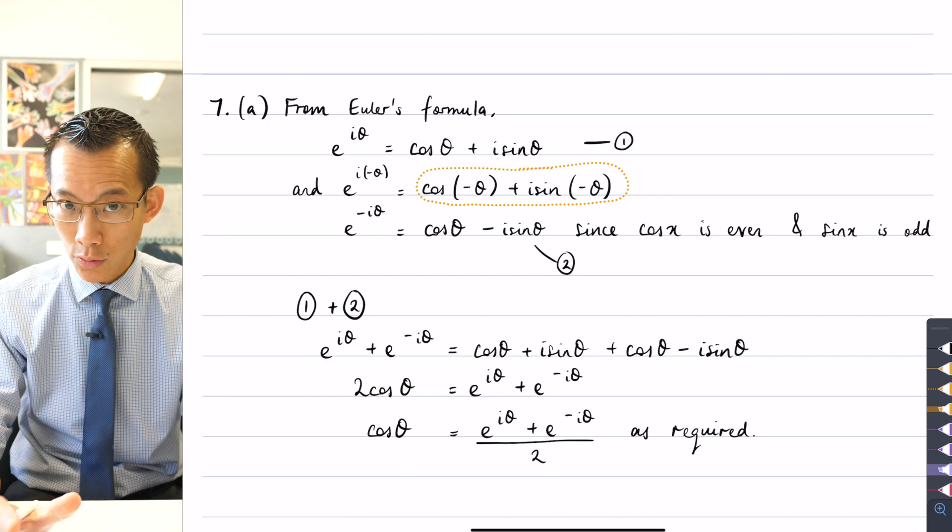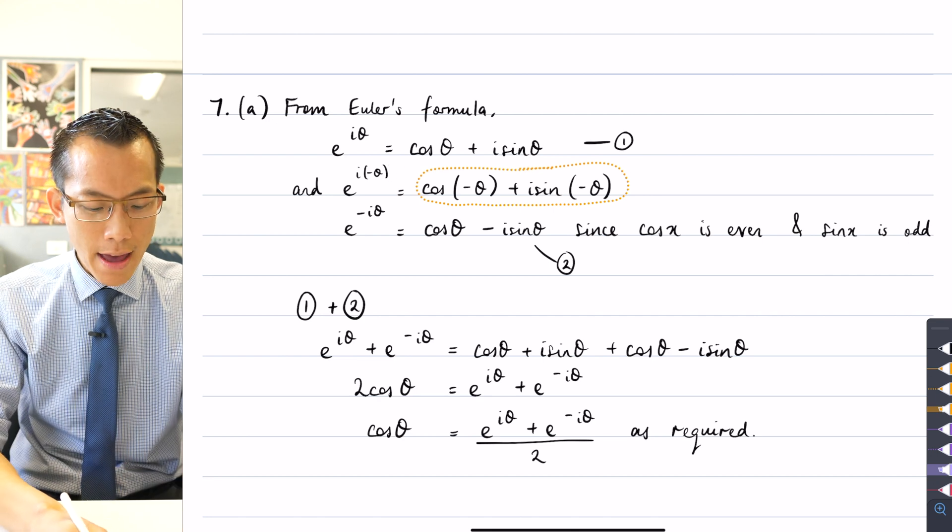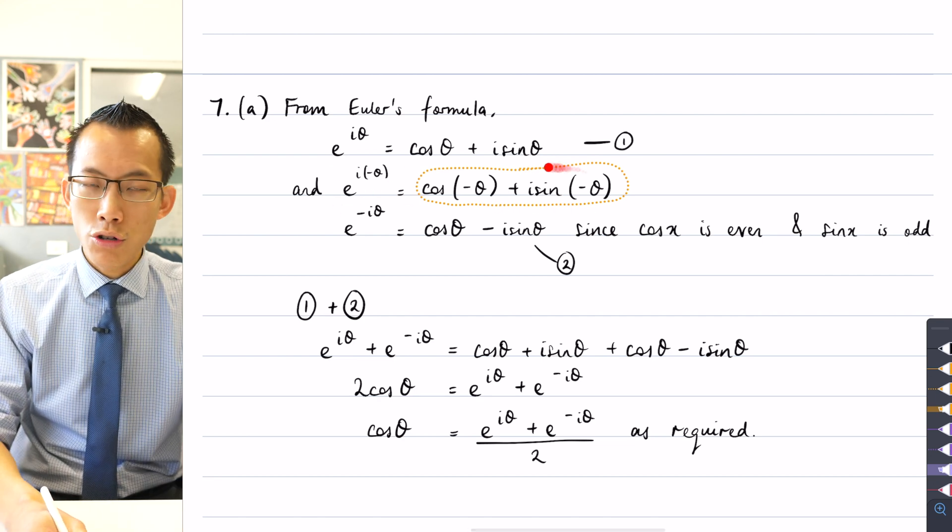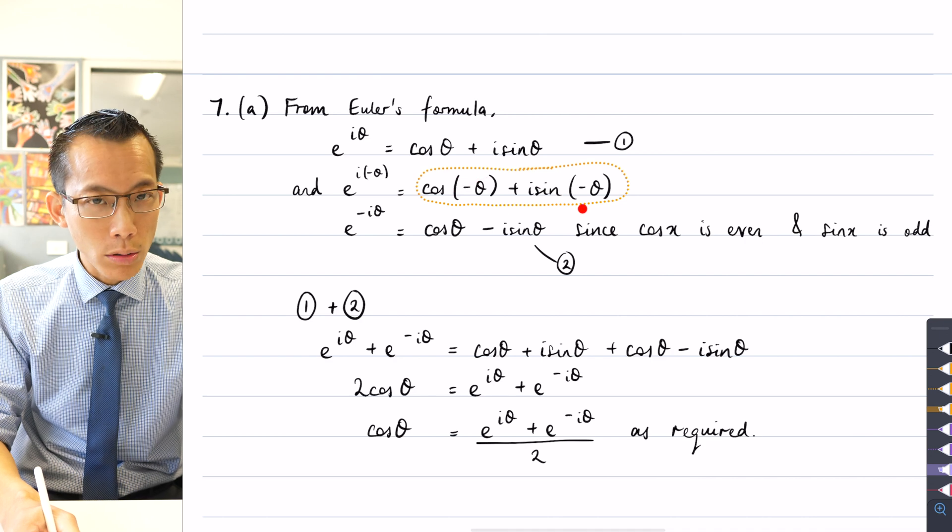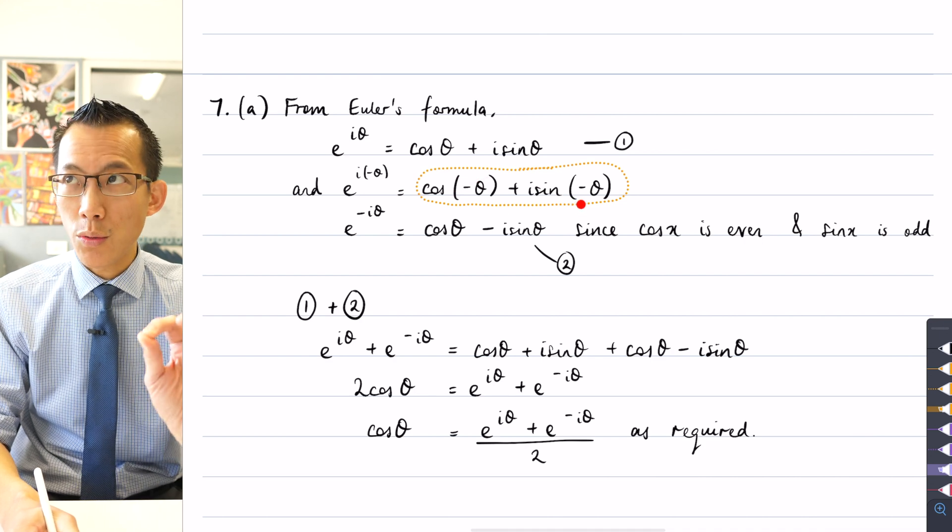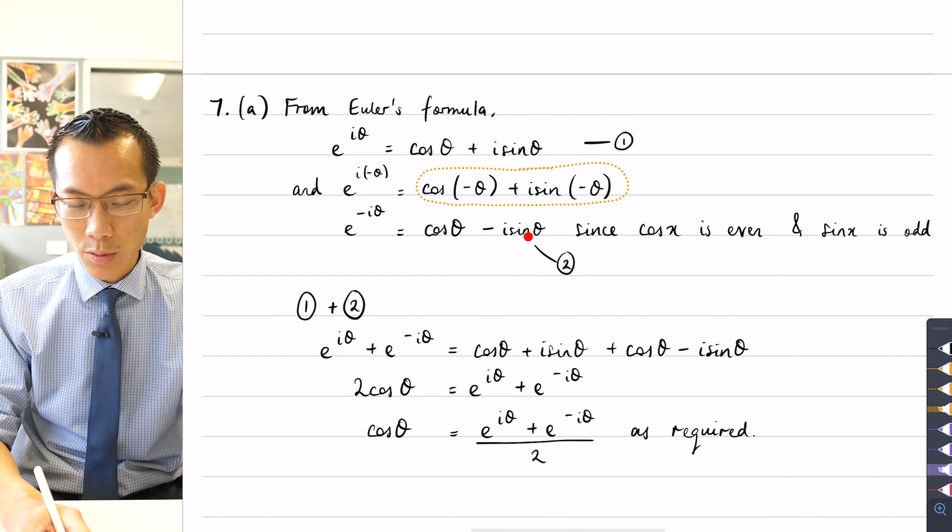So what am I doing here? I am just using Euler's formula to convert straight from exponential form to trigonometric form, to polar form. Now, the step that was skipped is going on to this next one.